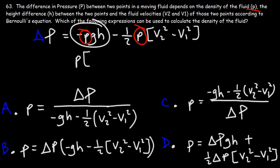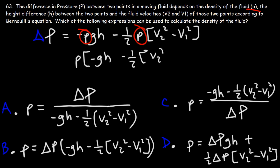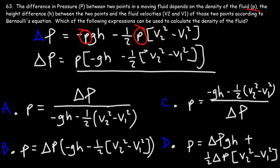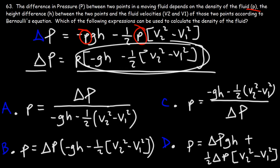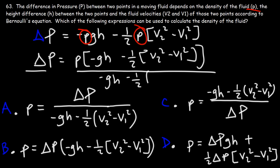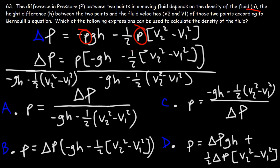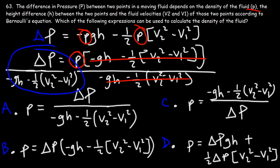If we take out rho from rho·GH, it becomes just negative GH. And if we take out rho from the other expression, we get everything except rho. The last thing we need to do is divide both sides by negative GH minus one-half V2 minus V1 squared. On the right side, all of that will disappear, leaving only rho. This corresponds to answer choice A.